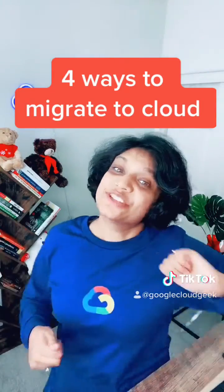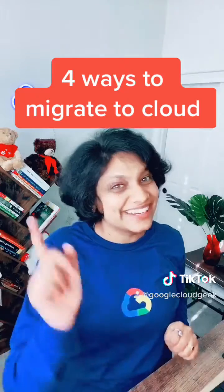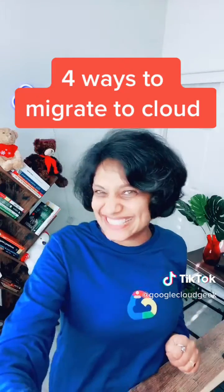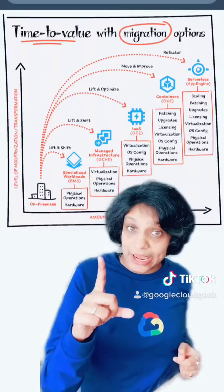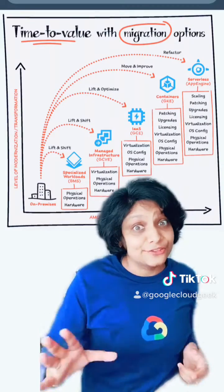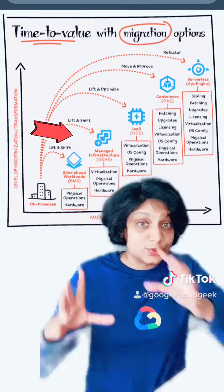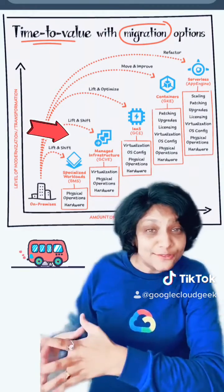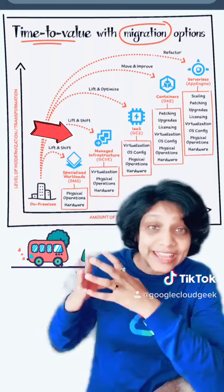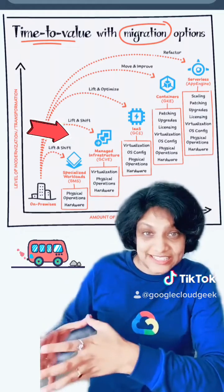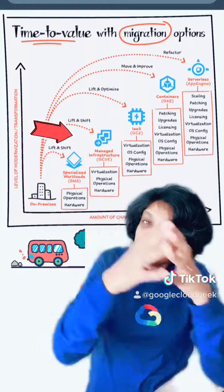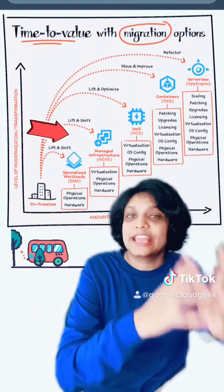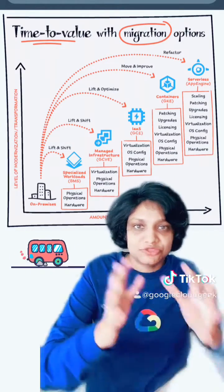Migrating to cloud can be hard. So here are the four ways in which you can migrate to cloud. The first way is lift and shift, where you take whatever you have on-premise or in your data center and move it as-is into the cloud.